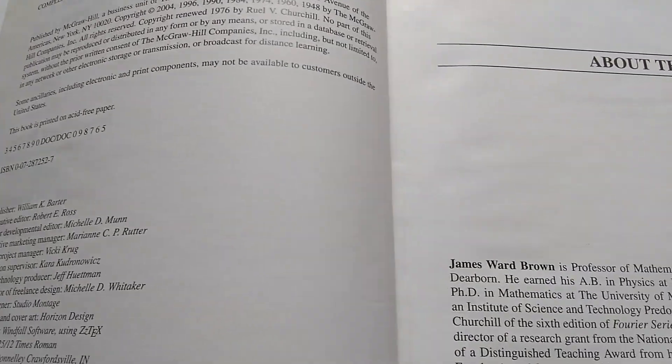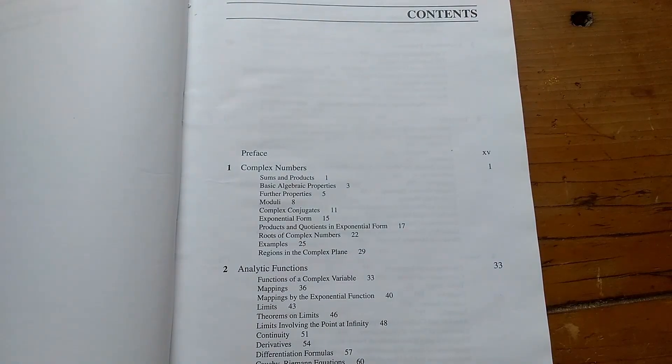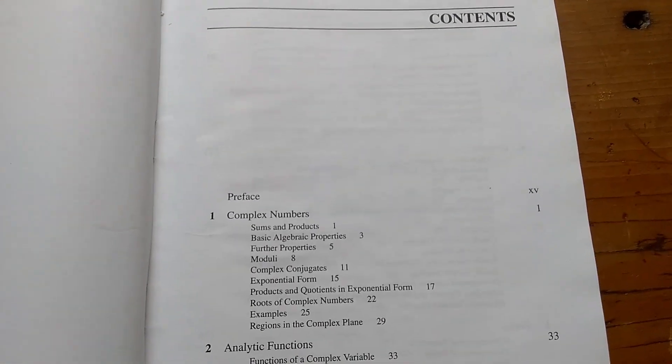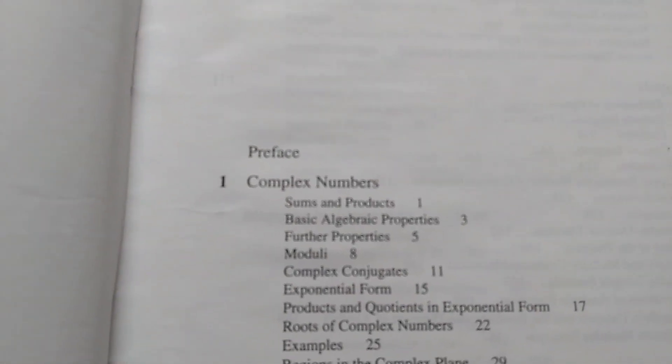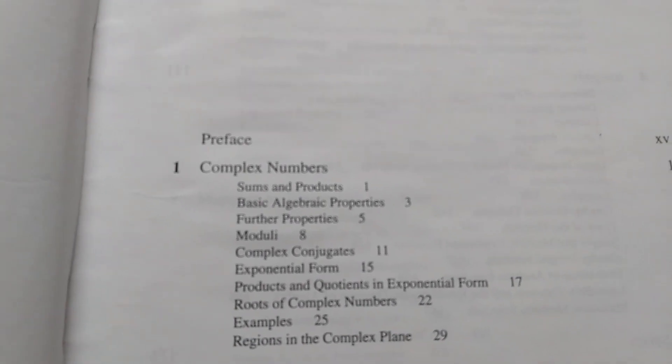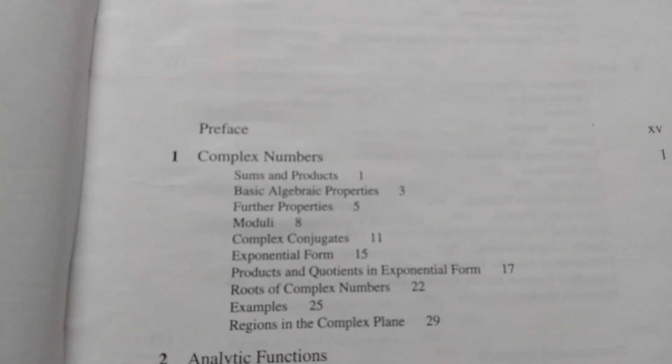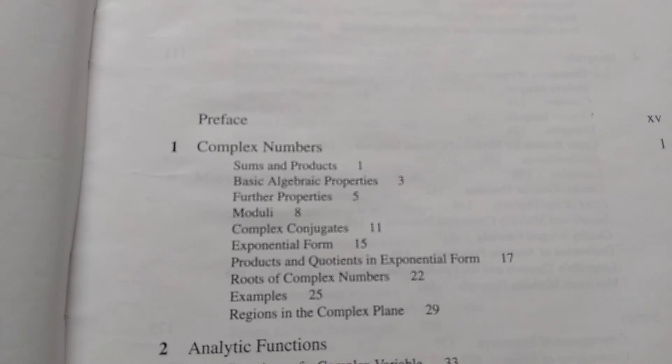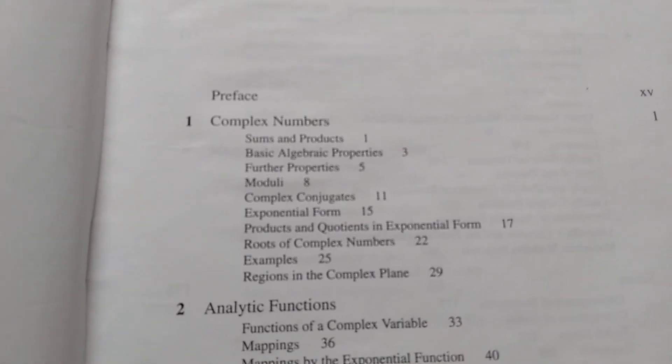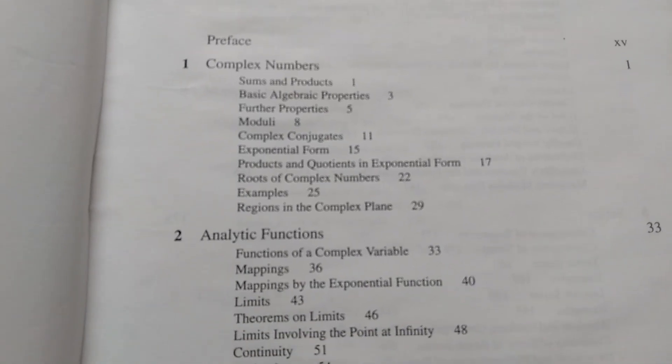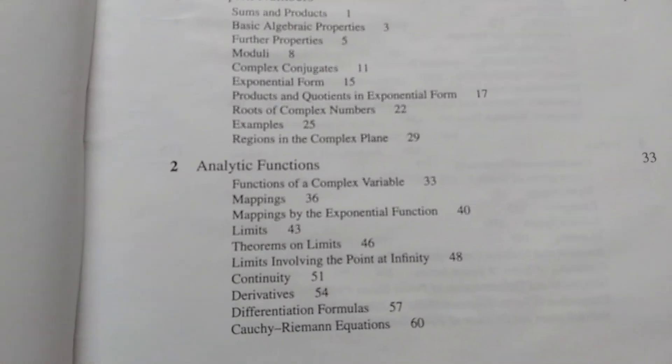It's been used for a very long time. So this is the table of contents. It starts off with complex numbers, and it starts off from the very beginning. So it's written in a very introductory way. So anyone with just some basic math knowledge, in theory, could pick this book up and start learning about complex variables.